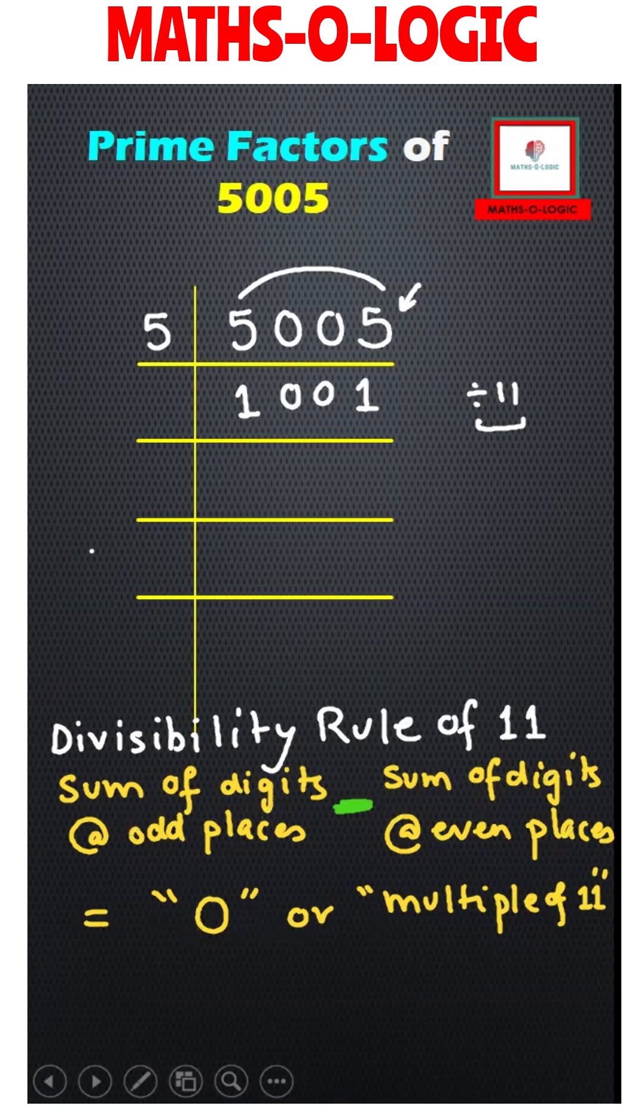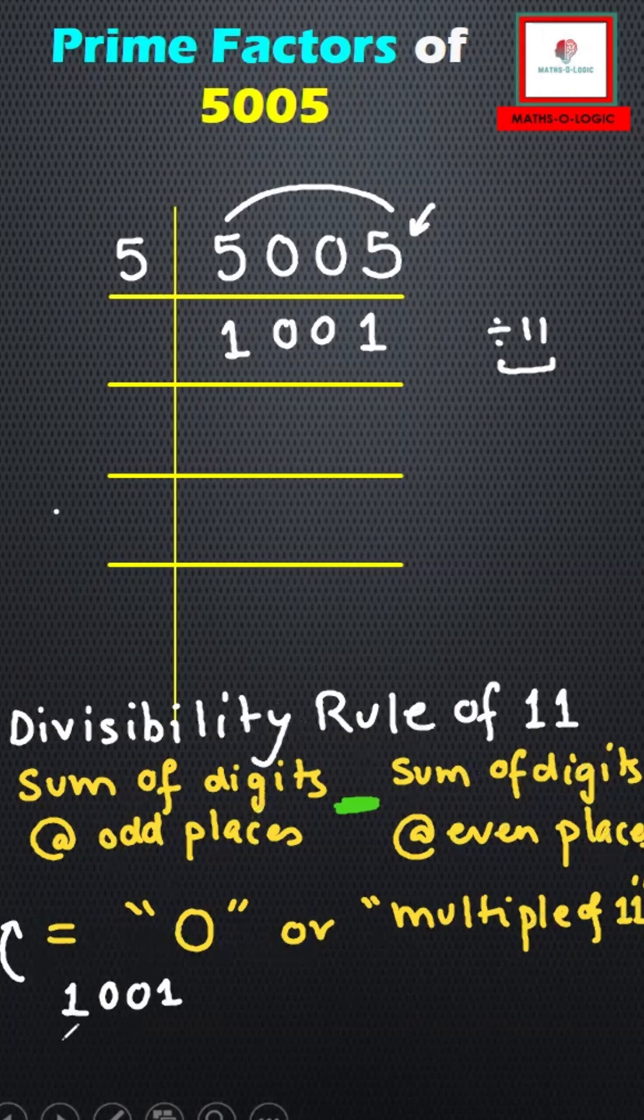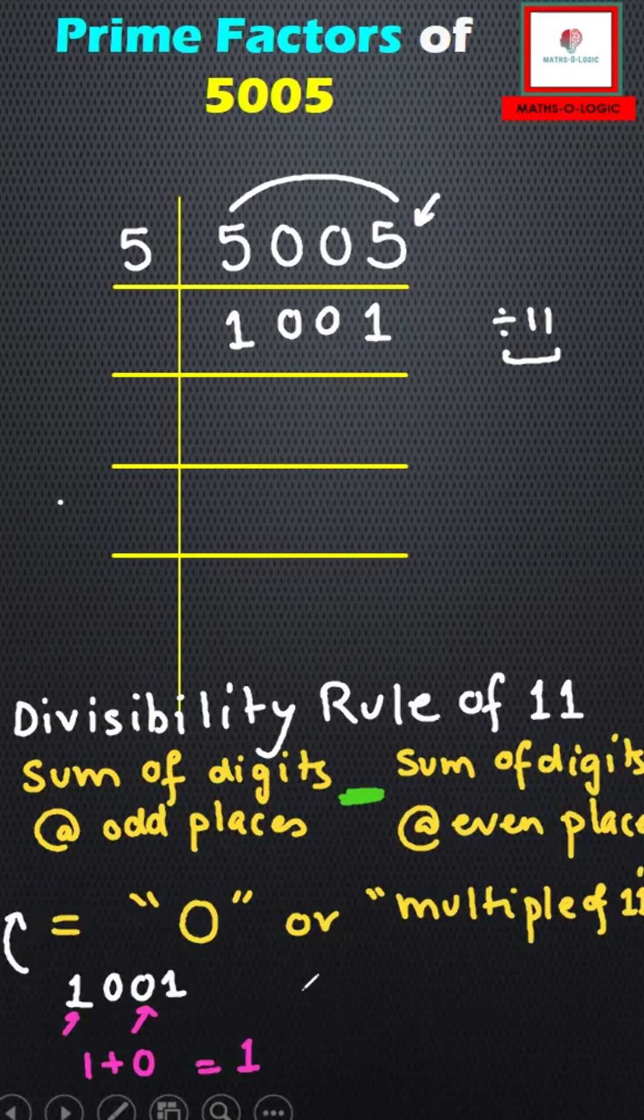Now I have to check the number 1001 with this rule. The odd places are the first place and the third place. Let's sum it up: 1 plus 0, this is 1. And let's check the even places: 0 plus 1.